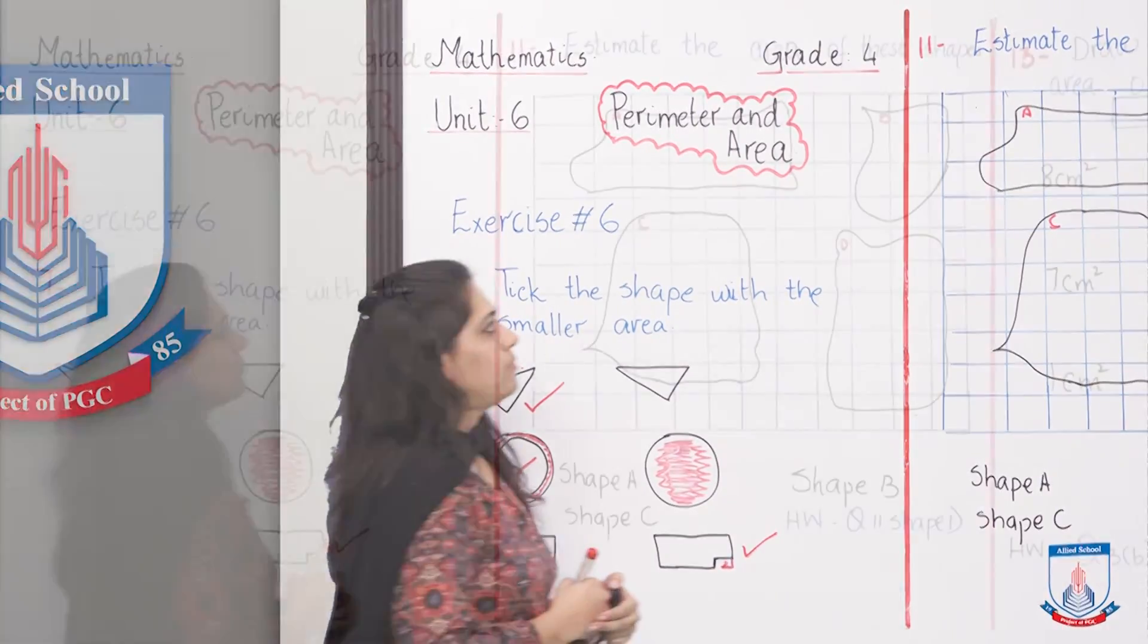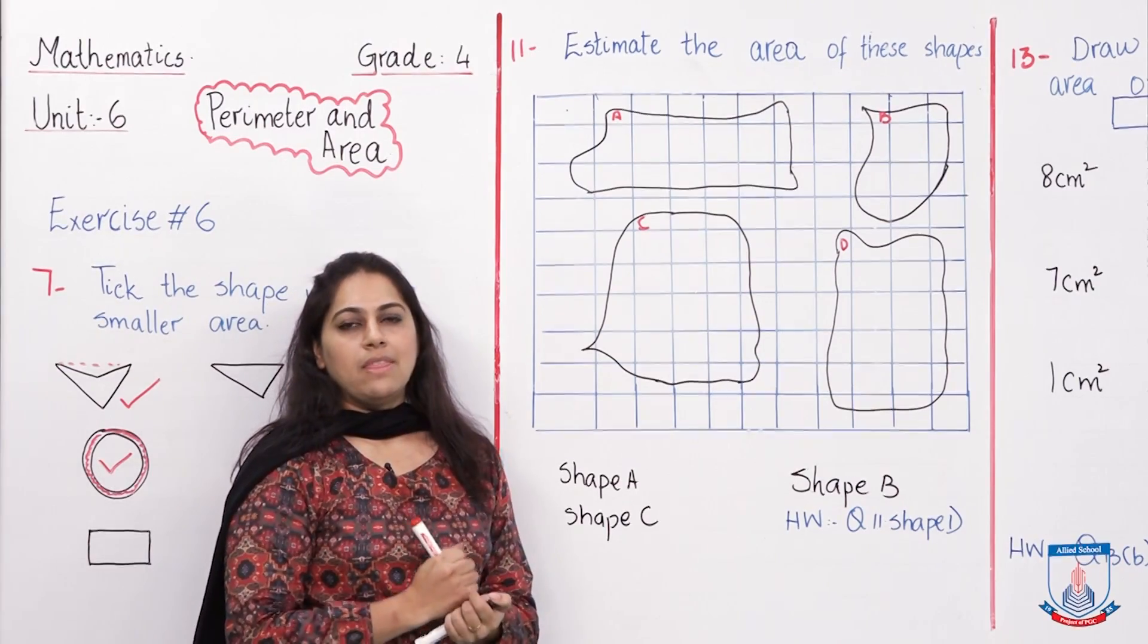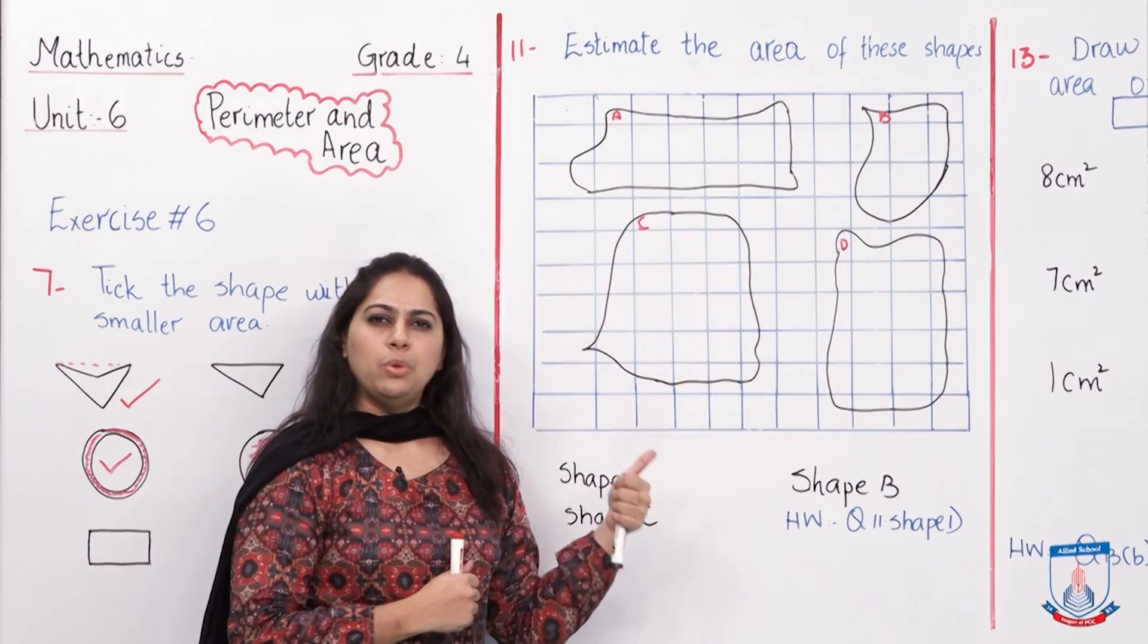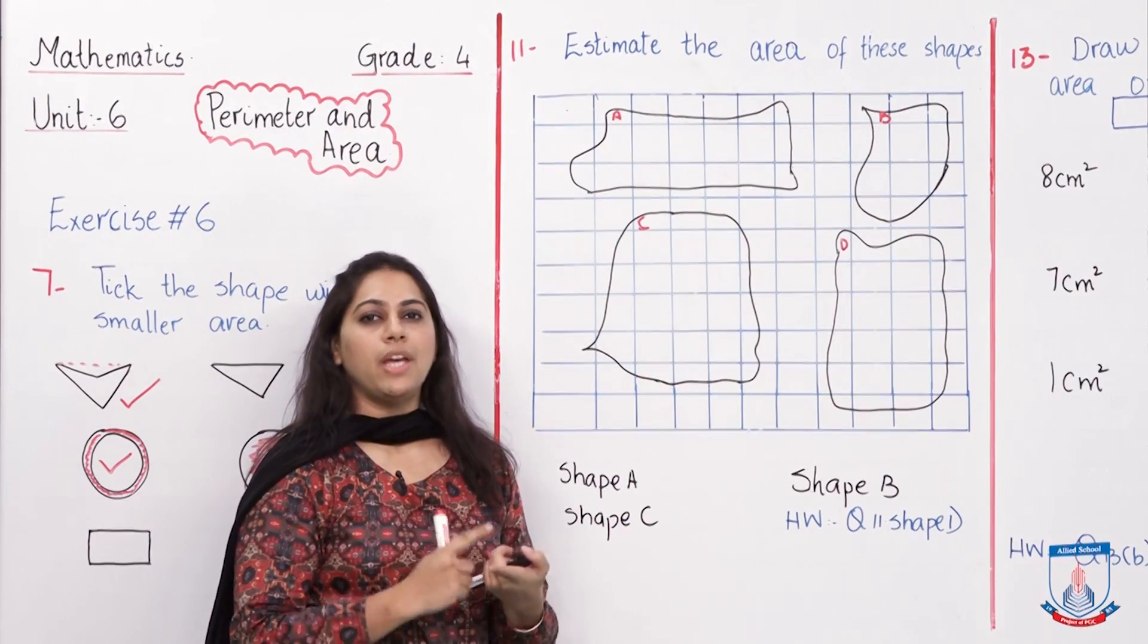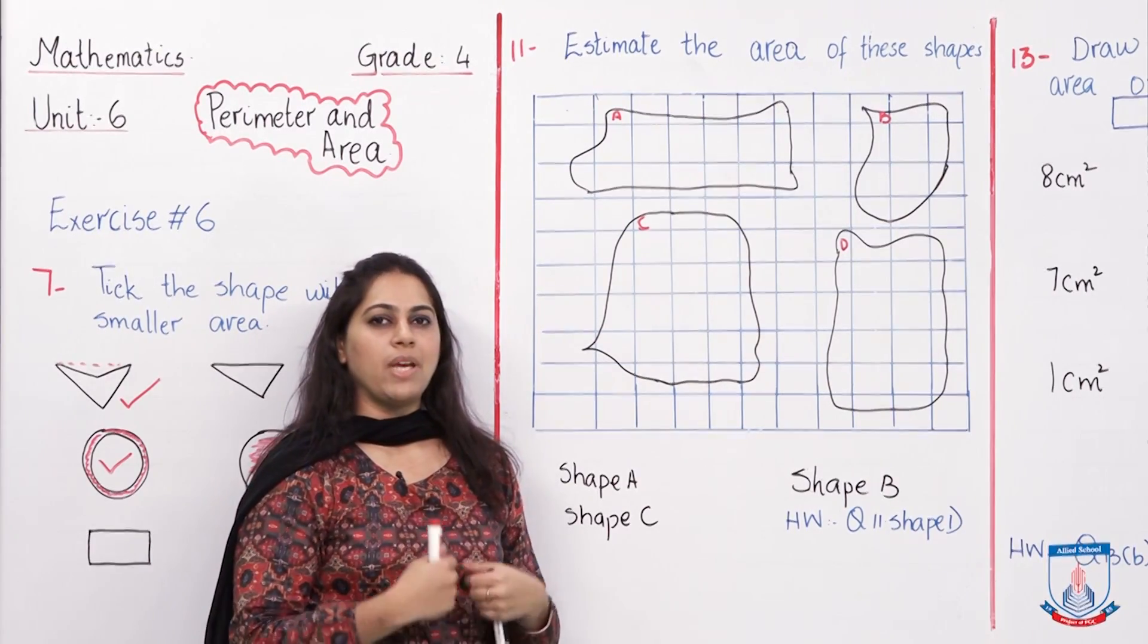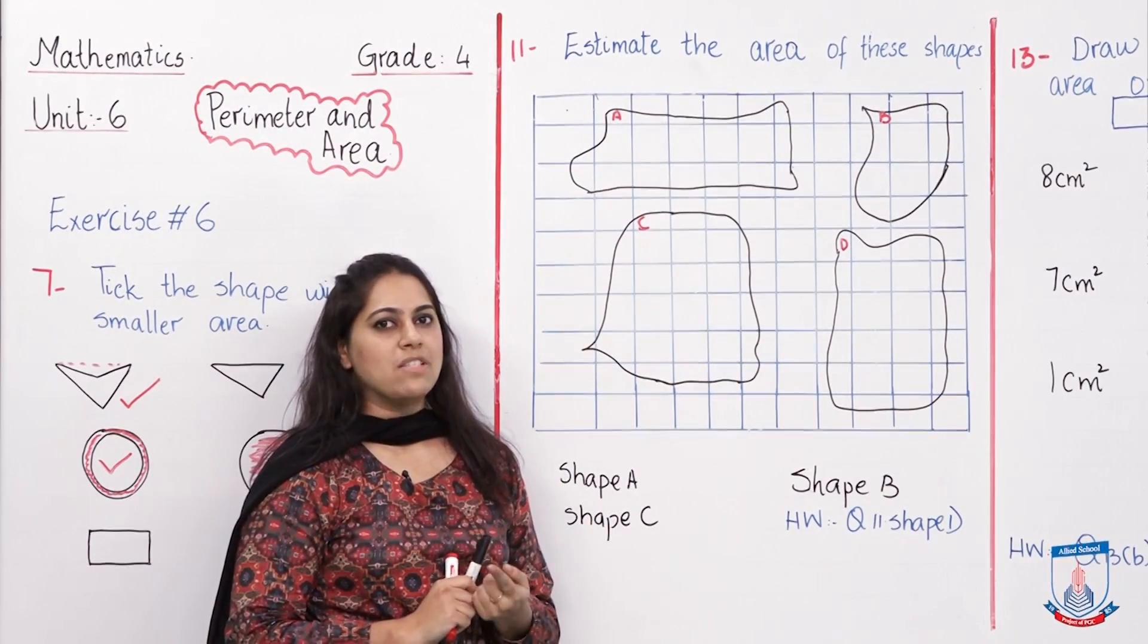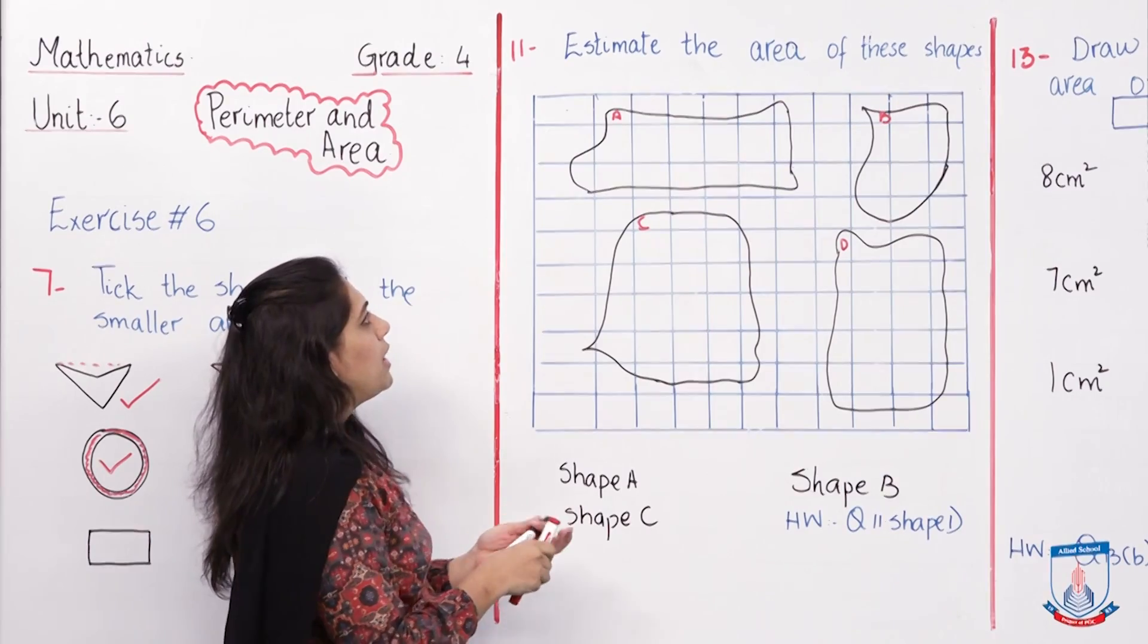Question number 11 says estimate the area of these shapes. You'll remember when we estimate, these shapes in front of you, do they have any length or measurement? We don't see any, so we call it an irregular shape, meaning they don't have a definite shape. I told you in the last lecture a way to figure out its area: we are going to count the square boxes, and whichever box is covered more than half, we are going to count it as one.